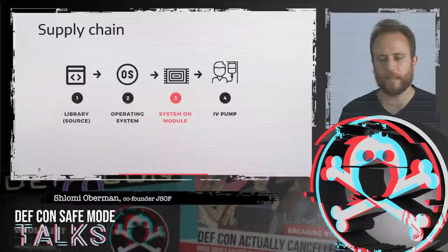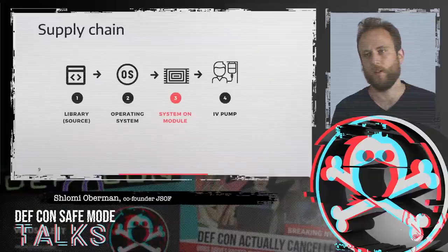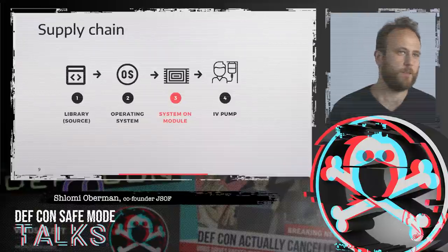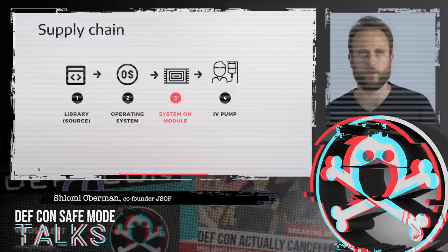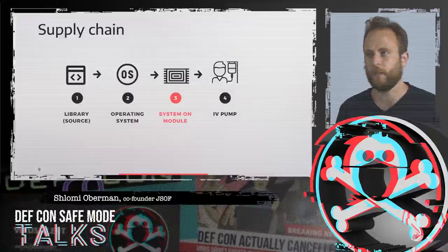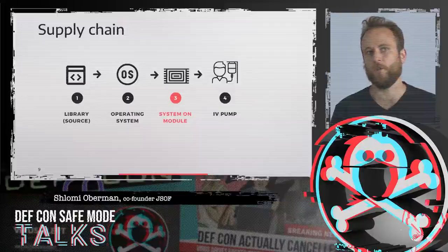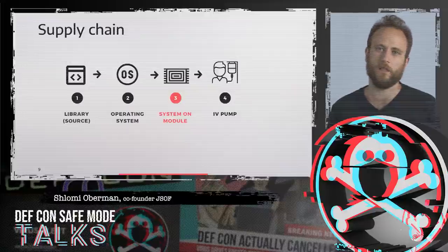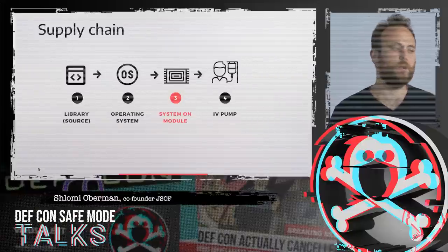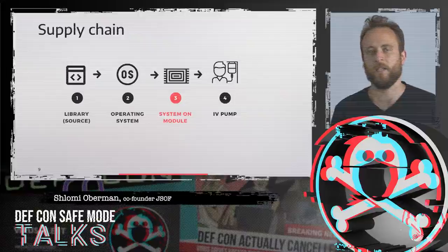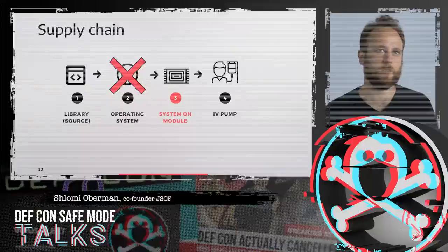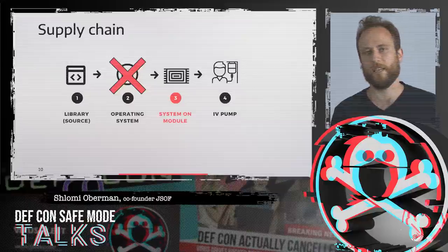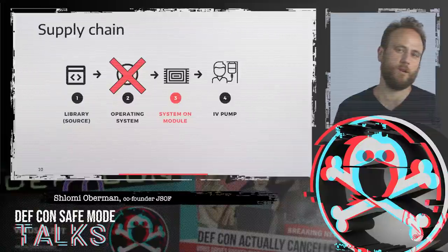How did this come to happen? This happened because of the supply chain and security in the supply chain — not in the sense that somebody put a backdoor into a component, but in the sense that a piece of code, a library, had a vulnerability, like any software. This piece of code was sold to an operating system, then sold onwards to a system-on-module, and the system-on-module embedded the operating system with the vulnerable library. From this point, nobody even knows they're using this piece of Trek TCP/IP stack. Just imagine what happens if one of the companies along the way goes bankrupt — just how difficult it is to track down the vulnerable devices and how complex it is to fix and patch.